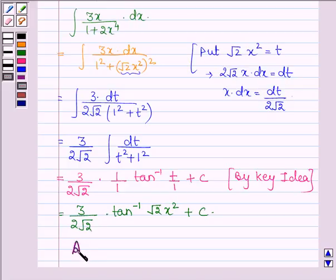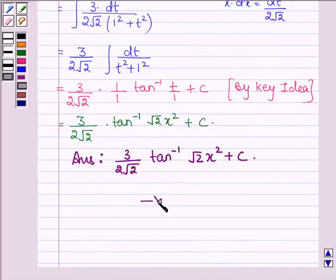Thus on integrating the given function we get 3 upon 2 root 2 tan inverse root 2 x square plus c. So this is our answer.